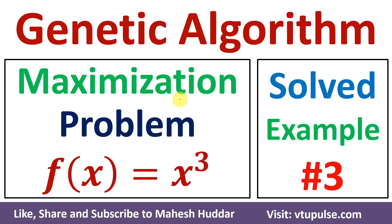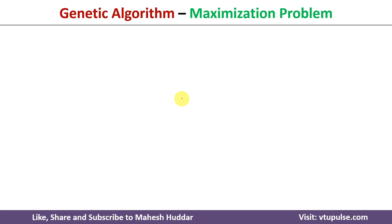Welcome back. In this video, I will discuss how to apply genetic algorithm to solve the maximization problem in machine learning, with the help of a simple solved example. In the previous video, I discussed what is genetic algorithm, what are the different steps in genetic algorithm, and I solved numerical examples using genetic algorithm. The link for those videos is given in the description below.